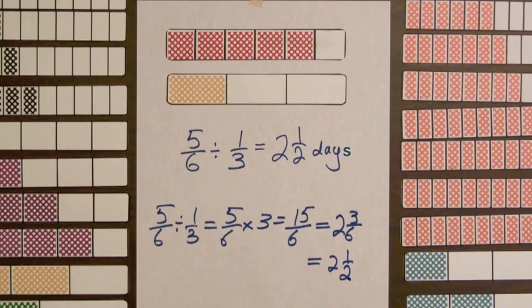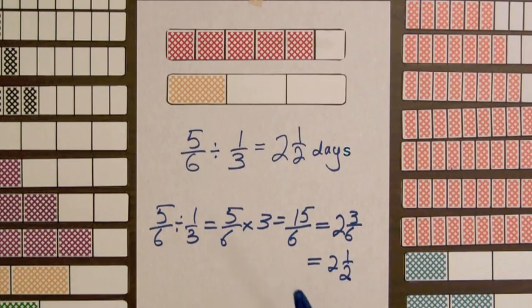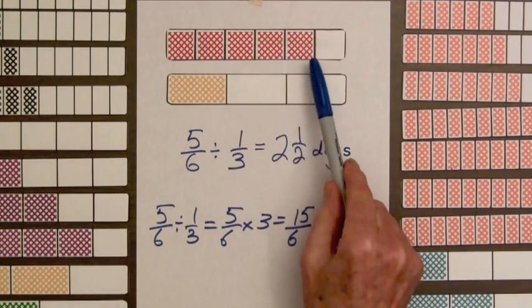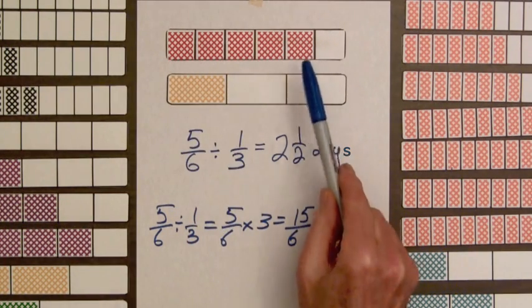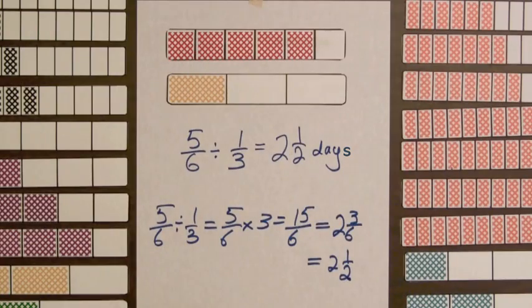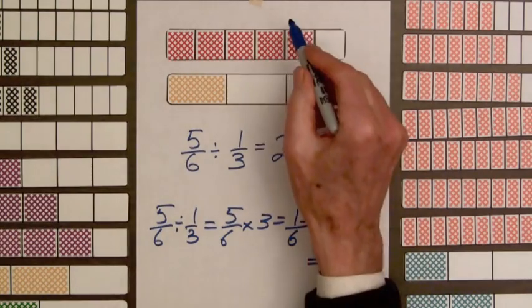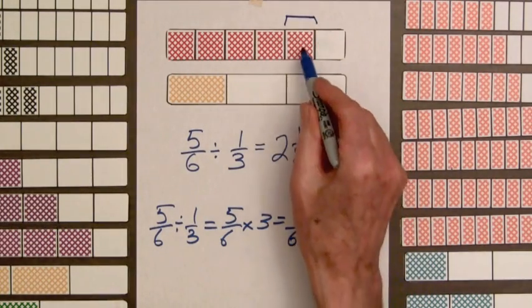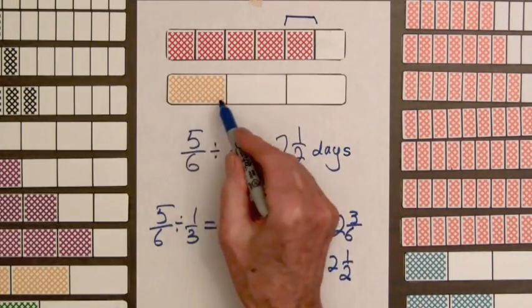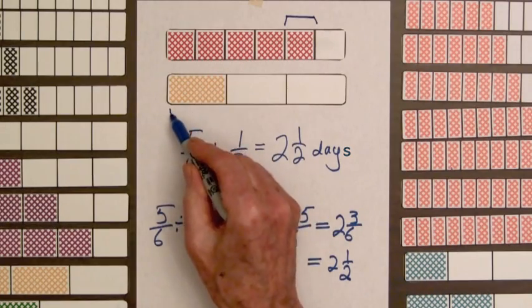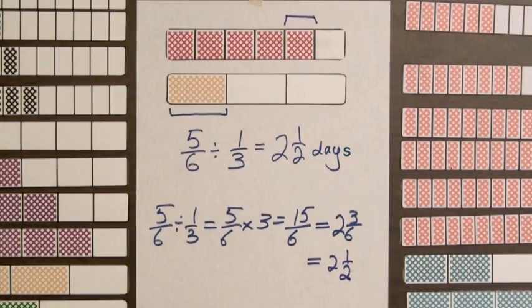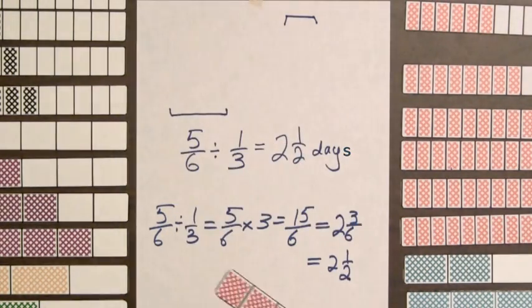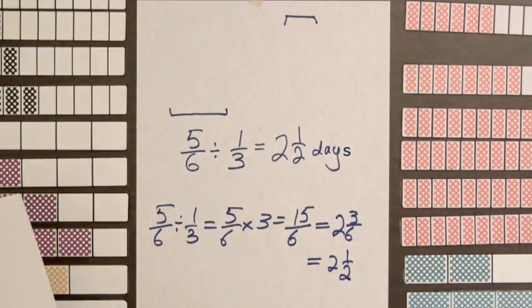So it's going to take two and one-half days. This answer makes sense because when the shaded amount of the one-third bar is fit into the shaded amount of the five-sixths bar, the remaining amount of the five-sixths bar is one-half the size of the one-third bar. Let's look at another example where the quotient is not a whole number.